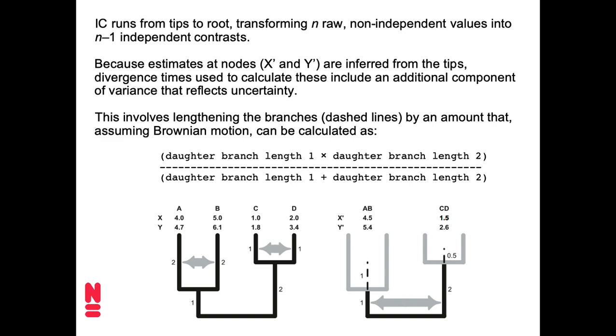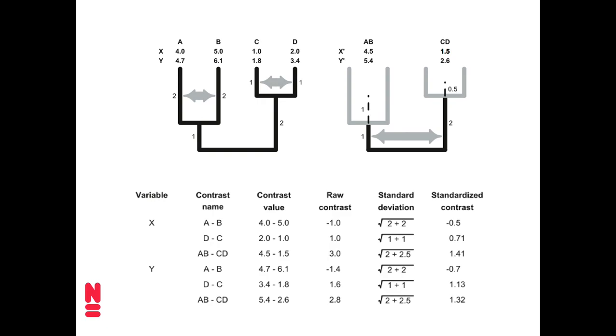Now, if we do that throughout the tree, then we get values that look like the following. So here we, again, have our two variables, X and Y. And we have, for each variable, three contrasts. The contrast between A and B, between D and C, and between the two clades A, B, and C, D. And then in the column that says contrast value, it shows what the subtraction is, right? So 4 minus 5, 2 minus 1, 4.5 minus 1.5. And that gives us these raw contrasts. So these are not just the differences in values. They are subtracted in a fixed order from one another. So because we take both the subtraction for trait X and trait Y, we have to do that in the same direction. So it's not just the absolute difference. It's in a particular order.